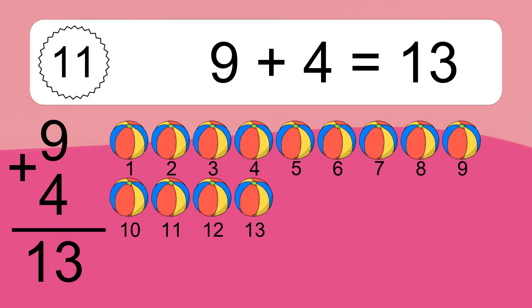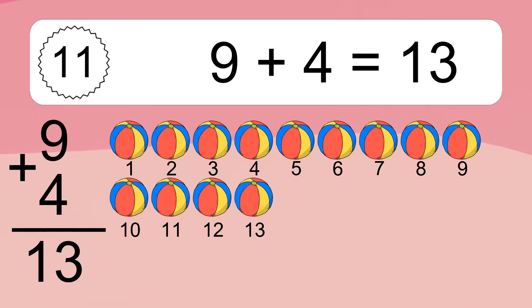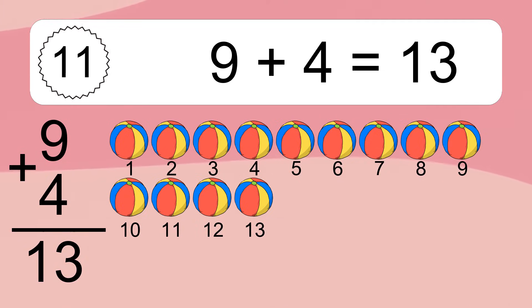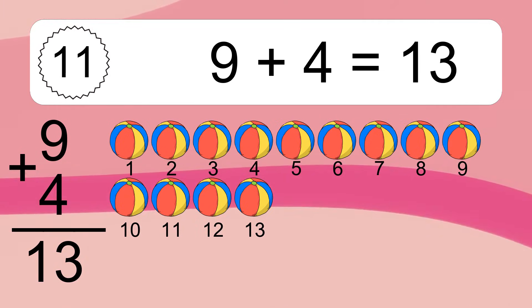9 plus 4 equals 13. Let's count it. 1, 2, 3, 4, 5, 6, 7, 8, 9, 10, 11, 12, 13.